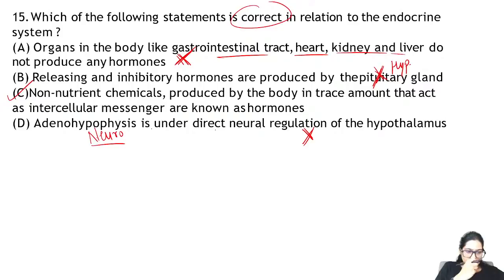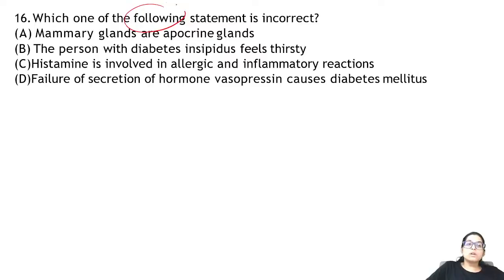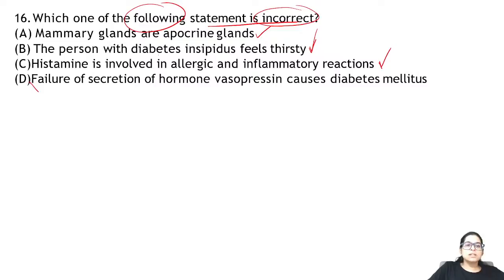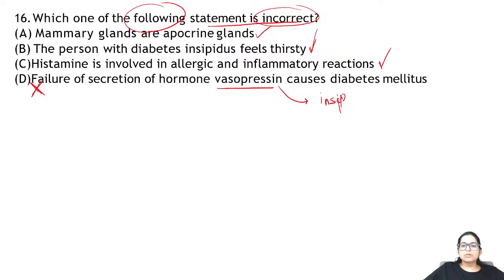Zoology Question 16: which statement is incorrect? Mammary gland is apocrine — correct. Diabetes insipidus is associated with thirst — correct. Histamine is involved in allergic and inflammatory reactions — correct. Vasopressin: if it is not secreted, diabetes insipidus occurs, NOT diabetes mellitus. So the last option is wrong.